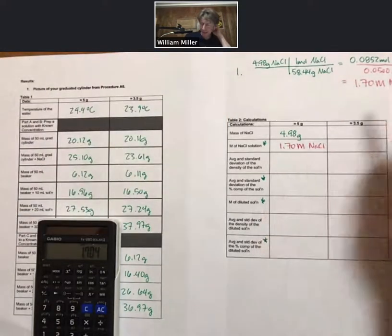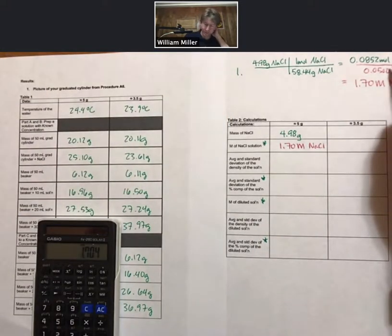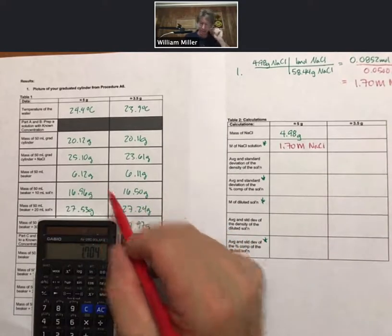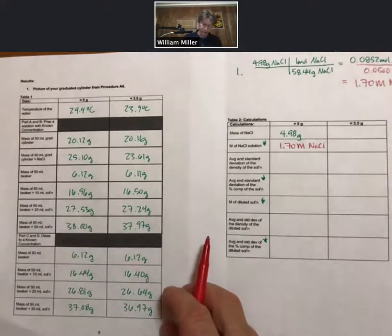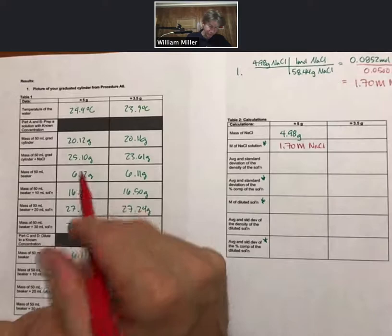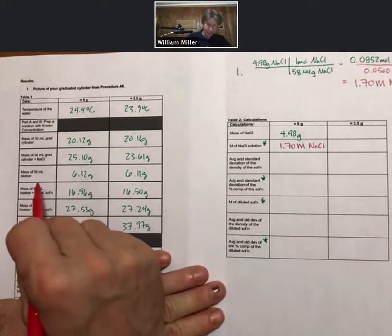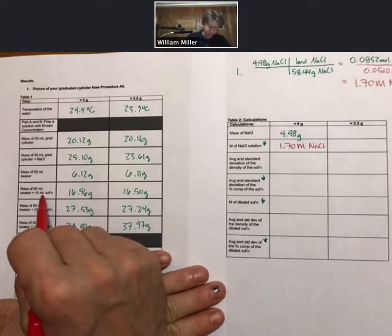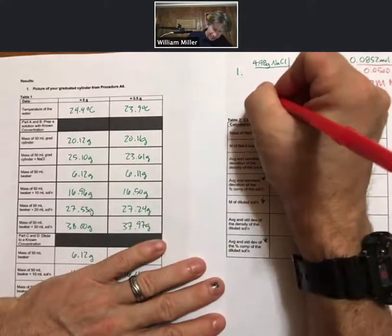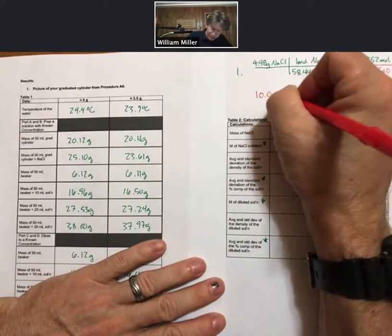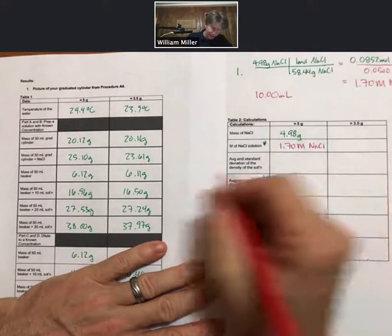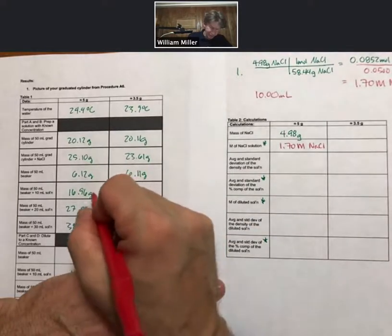And that's going to be constant because we only made one of the solutions. And then we took three samples of that solution. And so the next set of numbers we're going to get is whatever the mass of the beaker is. So you add 10 milliliters. And really we're adding 10.00 milliliters. And we've got a mass of solution here.